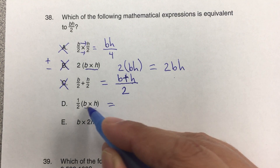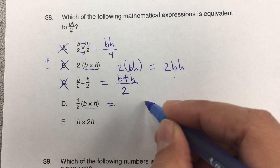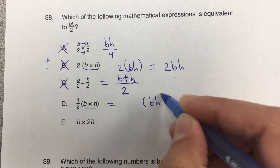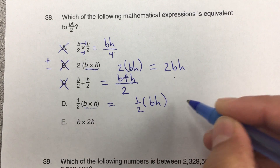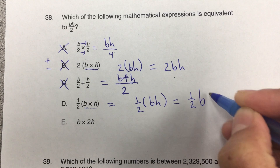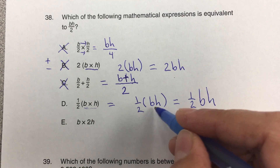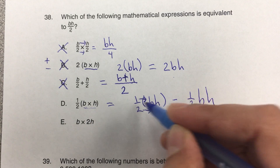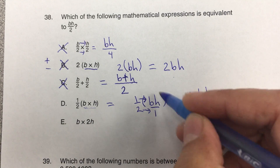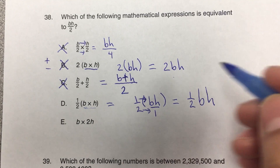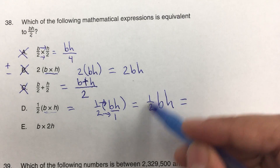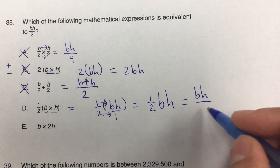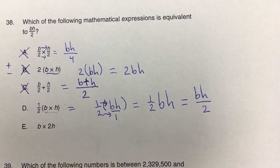For letter D, whatever is inside the parentheses — which is b times h, or bh — you carry the one half over from outside. So it equals one half times bh. Another way to see it: put bh over 1, then multiply straight across — 1 times bh is bh, 2 times 1 is 2, giving bh over 2. That is the same as what was given, so letter D is equivalent and correct.